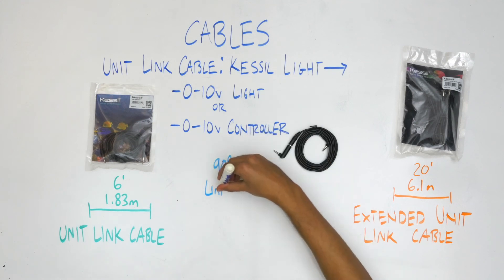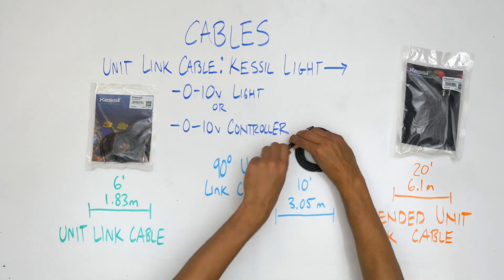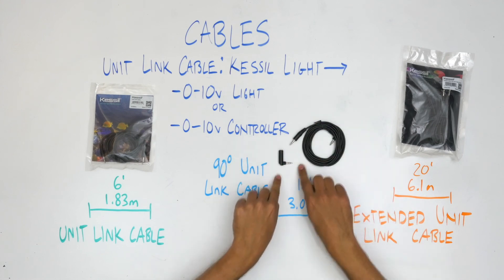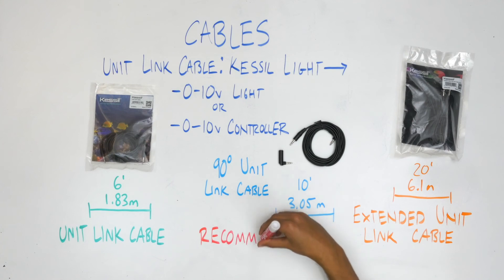The 90 degree unit link cable is the recommended cable for this light, as its profile is the most conducive to A80 aquarium setups.